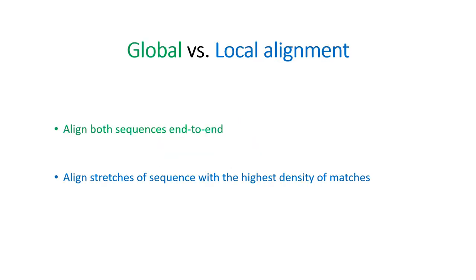Now that we understand scoring, matches, mismatches, and gaps, let's refresh the concepts of global and local alignment. In global alignment we align both sequences end to end — this is preferred for sequences that are similar or evolutionarily close. Local alignment aligns stretches of sequences with the highest density of matches — useful when two sequences are evolutionarily divergent and we are interested in which regions are similar, for example conserved motifs or domains.